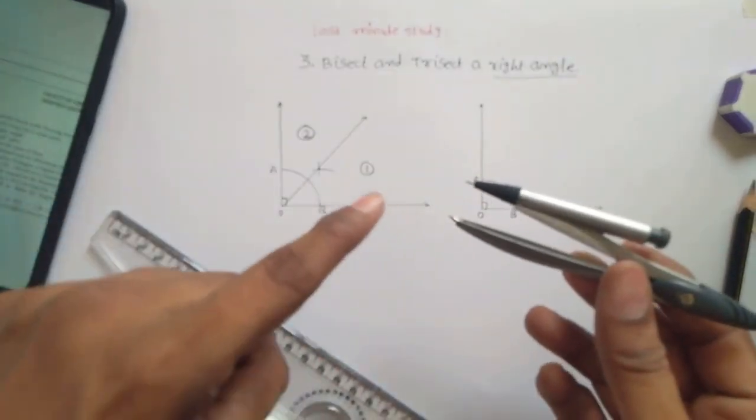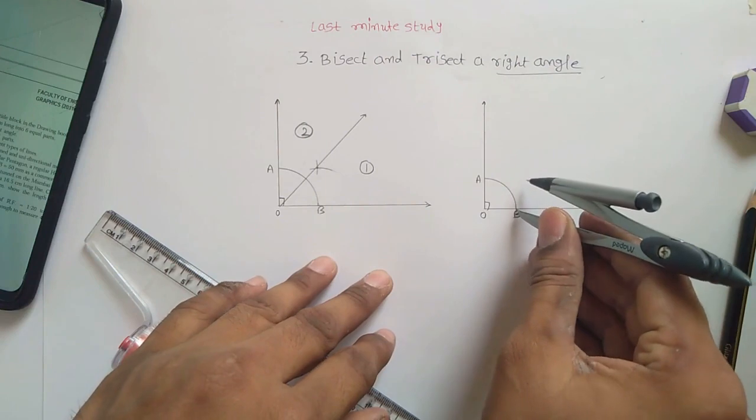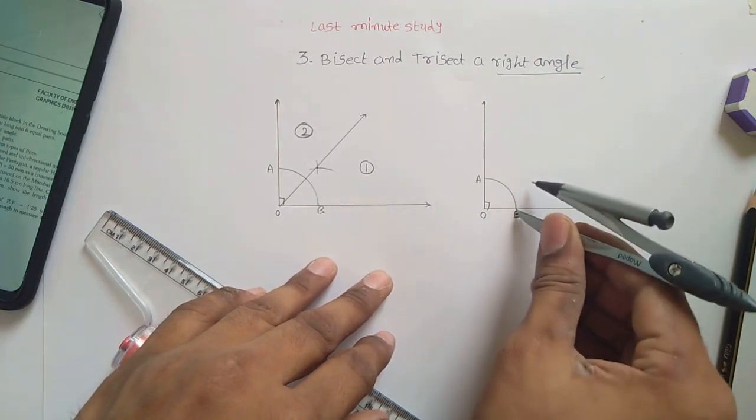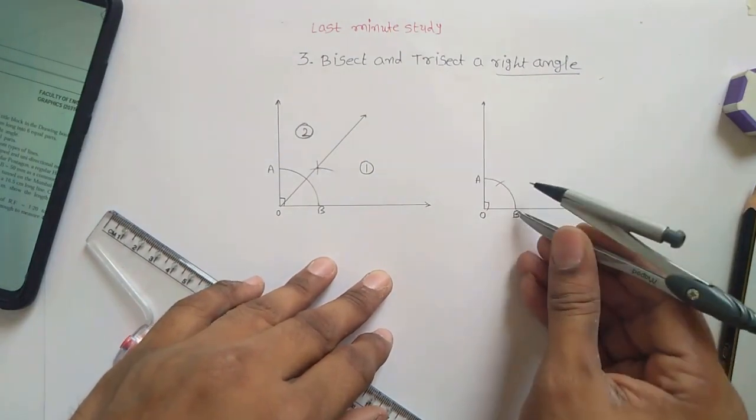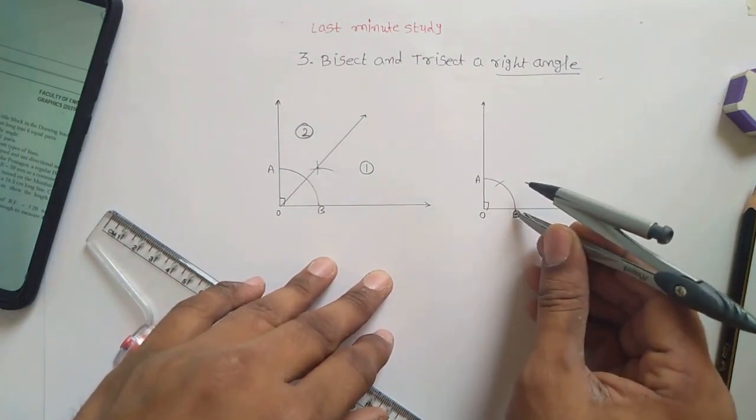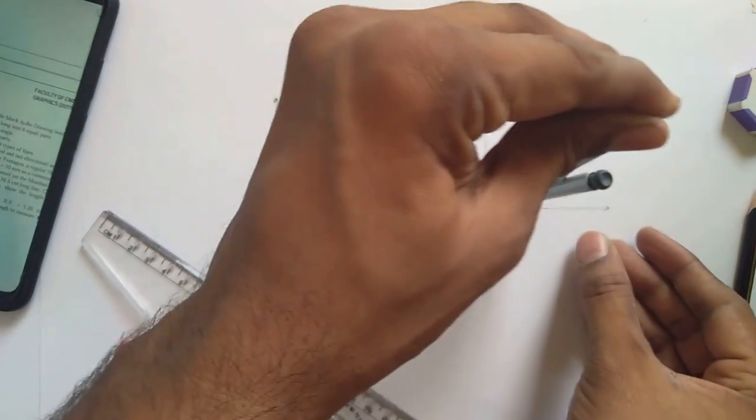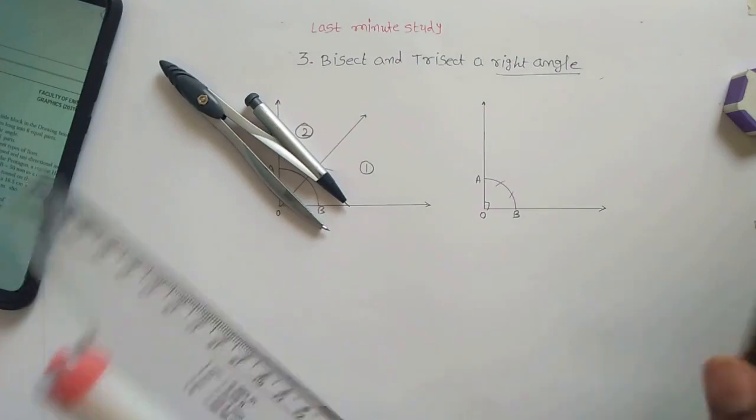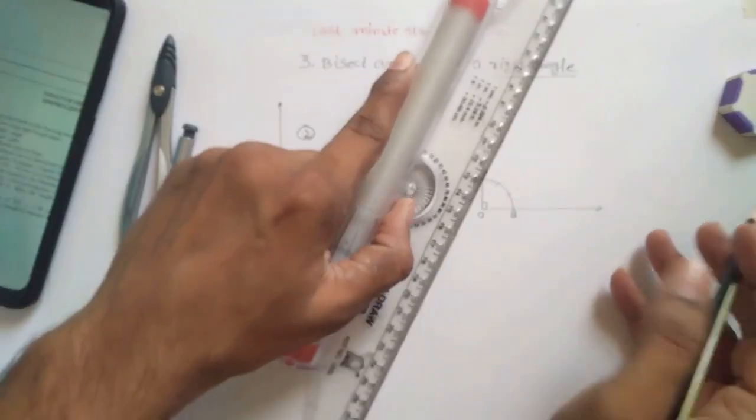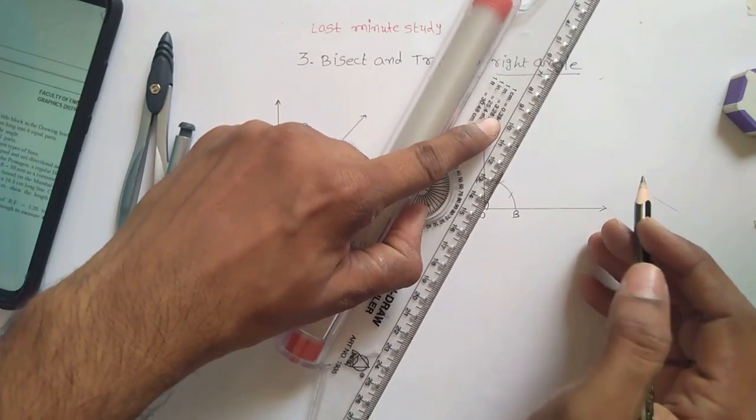Now maintain this distance. Put pointer on B. Now in this case, instead of drawing outside the curve, you have to construct on the curve. On the curve by putting pointer on B. And now put pointer on A, make an arc on the curve like this.